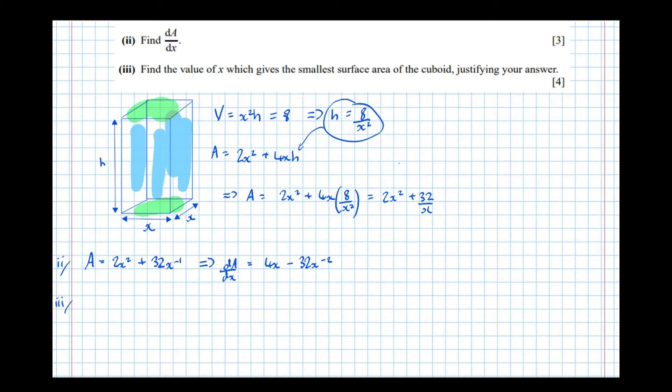And part 3: Find the x value which gives the smallest surface area of the cuboid, justifying your answer. So some key words there, justifying your answer. We'll go through what that means in just a second. But first of all, let's find the value of x which gives the smallest surface area.